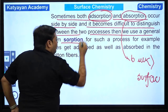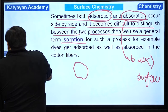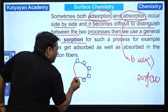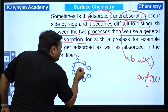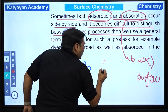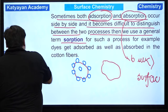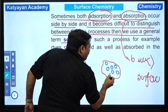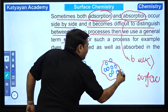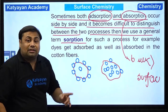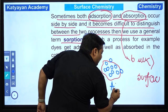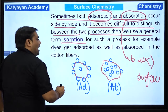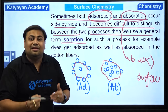Adsorption mein surface pe molecules zyada hain, bulk mein kam. Absorption mein bulk mein molecules zyada hain, surface pe kam. Agar bulk mein phenomena zyada hogi — bulk mein molecules zyada hongi — that will be absorption. Aur agar surface pe phenomena zyada hogi, that phenomena is said to be adsorption. So there is a clear difference between adsorption and absorption.